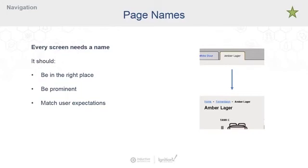What we mean by matching user expectations is just that if I click a link on a previous page that says Amber Lager, I would expect to then be taken to a page titled Amber Lager. We just want to be clear about where we're going and meet those users' expectations.